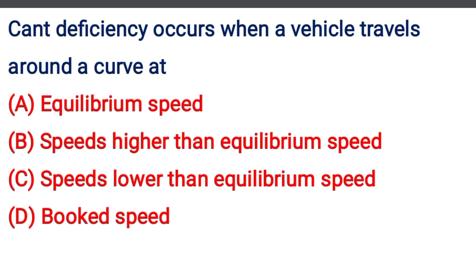So the first question: Cant deficiency occurs when a vehicle travels around a curve at — Option A: Equilibrium speed, Option B: Speeds higher than equilibrium speed, Option C: Speeds lower than equilibrium speed, Option D: Booker speed. The correct answer is Option B: Speed higher than equilibrium speed.